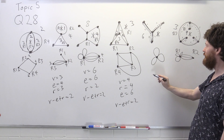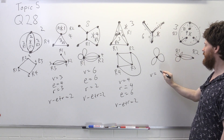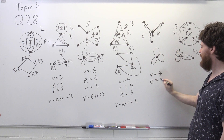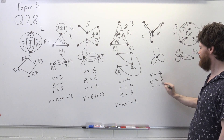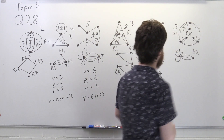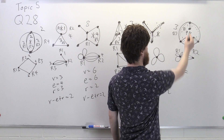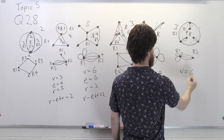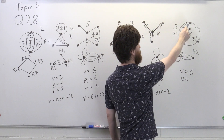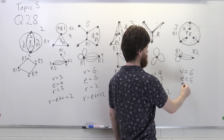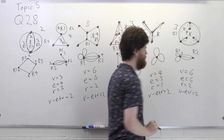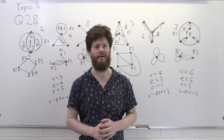For the fourth graph: v equals four, e equals three, r equals one, so four minus three plus one equals two. For the final graph: v equals six, e equals six, r equals two, so six minus six plus two equals two. Euler's formula holds for all of these graphs. That's how you do question 28.